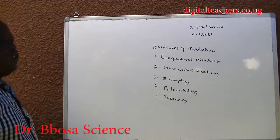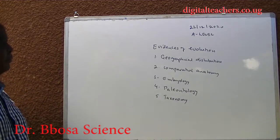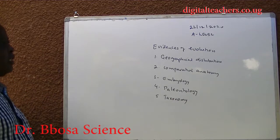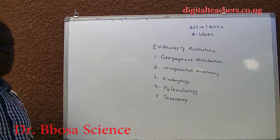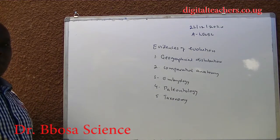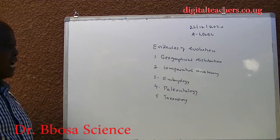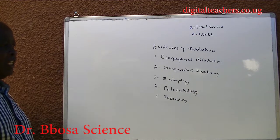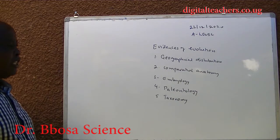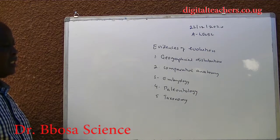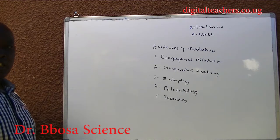Evidences of evolution. They include: one, geographical distribution; two, comparative anatomy; three, embryology; four, paleontology; and five, taxonomy.